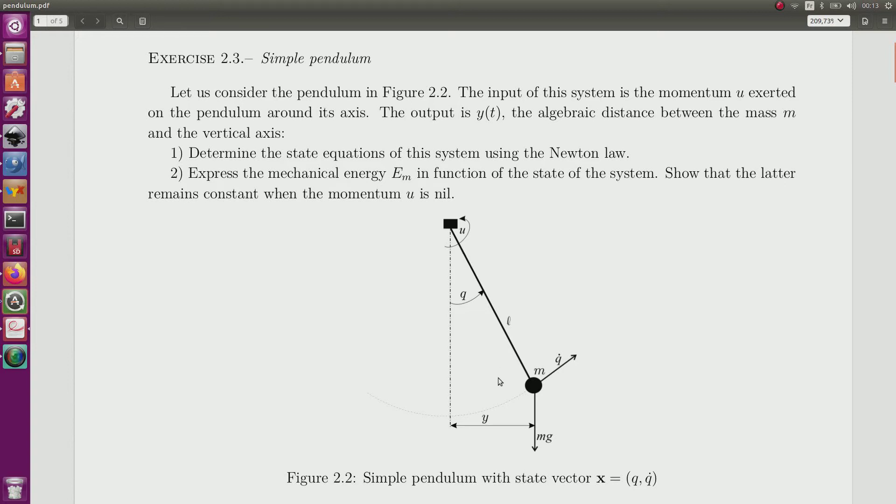The output is Y, so it is the distance between the vertical axis and the mass at the extremity of the rod.